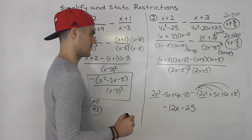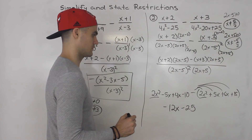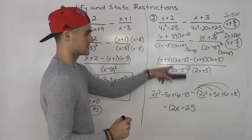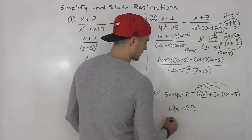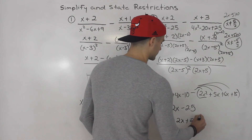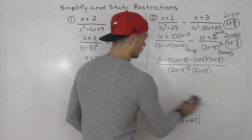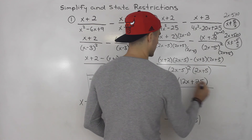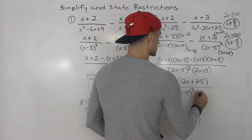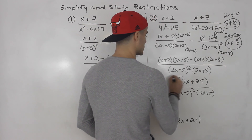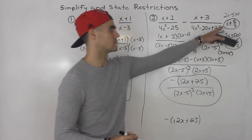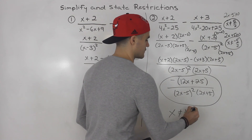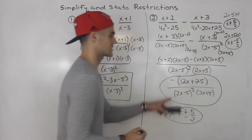So the numerator simplifies to negative 12x minus 25. Check if you can factor the numerator — you can't really factor it further, though you could factor out a negative to make it look a little nicer: negative bracket 12x plus 25. So the full expression simplifies to negative bracket 12x plus 25, all over 2x minus 5 squared times 2x plus 5. The restrictions are x cannot equal plus or minus 5 over 2 — two restrictions. And that's what it simplifies to.